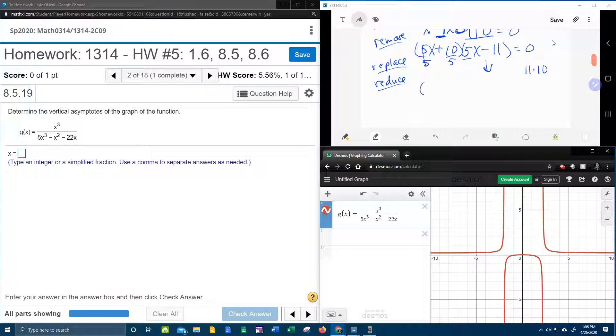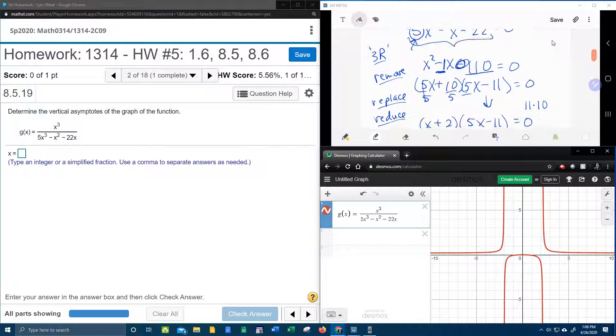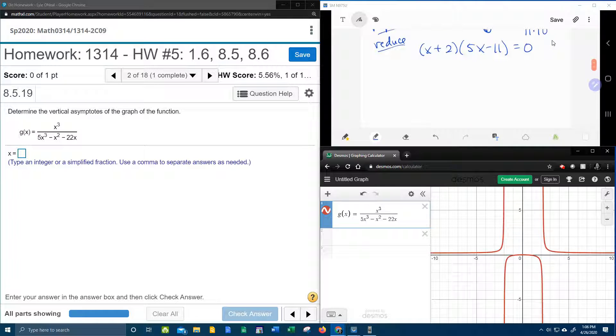10 divided by 5, that's a 2. And then the 5x minus 11 comes down. And now this is factored completely. That's the original trinomial factored completely.